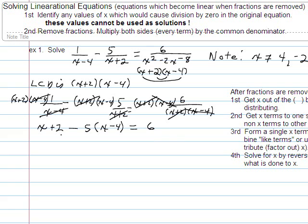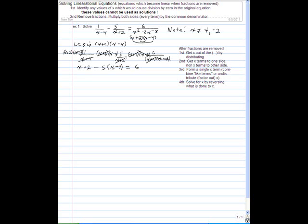And notice how much simpler an equation this is than that original equation. When you get rid of those denominators, there's just little left to do. Once the fractions are removed, get x out of the grouping symbol by distributing. Okay, I've got only one x in the grouping symbol. That's this one here. This x is not in a grouping symbol.